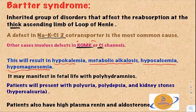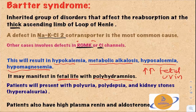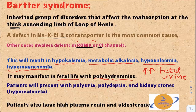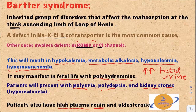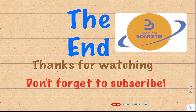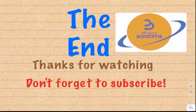Bartter syndrome can manifest in fetal life as polyhydramnios due to increased fetal urine production from sodium and water loss. After birth, patients may present with polyuria, polydipsia, and kidney stones from hypercalciuria. Patients have elevated plasma renin and aldosterone levels. In the next video, I'll discuss the corticomedullary osmotic gradient and how it develops through urea recycling and counter-current multiplication. Thank you for watching, and please subscribe.